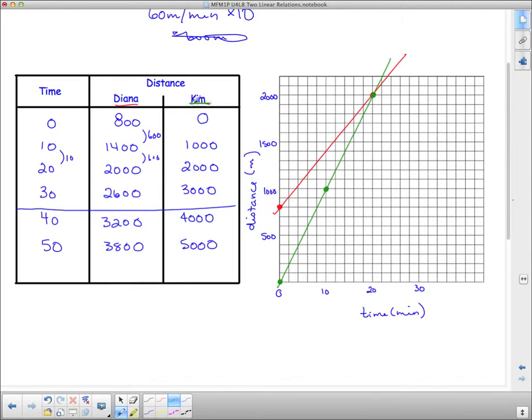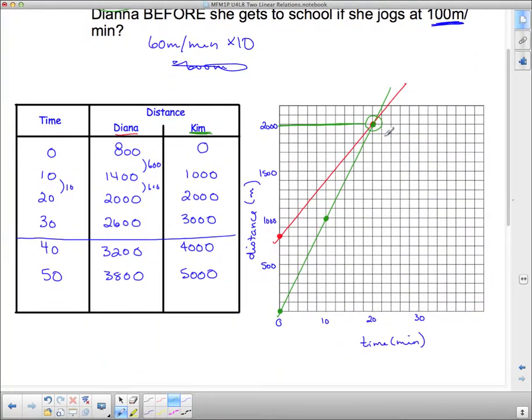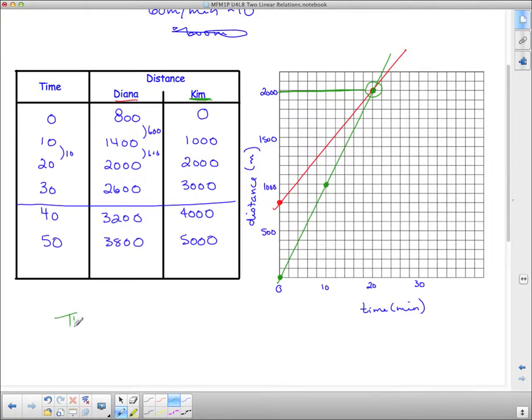And now I put on Kim's in green. And notice that where they meet, they meet at 2,000 meters. And since the school isn't until 2,200 meters, they actually do meet right before they get to the school. So we say they meet at 2 kilometers, only 0.2 kilometers, or 200 meters from the school. So she does catch up to her, but it takes her a while. And that concludes this video. We'll see you next time. Bye.